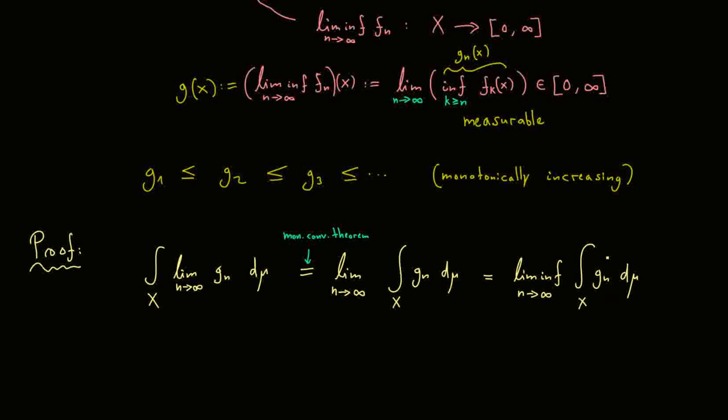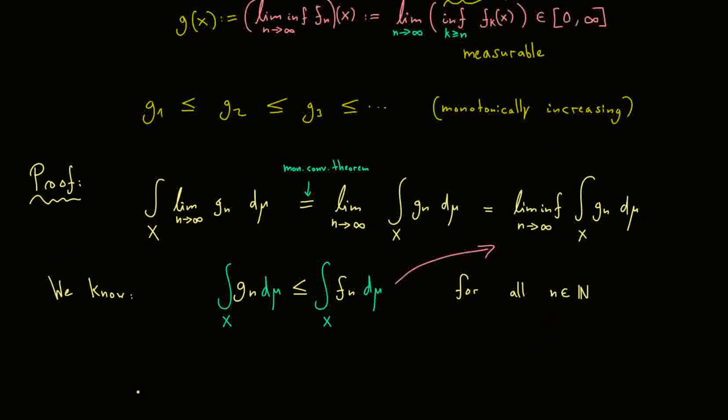However, in the end, we want fn and not gn in the integral here. Therefore you can ask, what is the connection between gn and fn? And then you look at the definition and see, okay, gn is defined over all fk, where k is bigger than n. And then you choose the infimum, the smallest possible value. And therefore, of course, gn is always less or equal than fn as being the infimum. So let's state that as we know, gn less or equal than fn for all n. And now you want to use the monotonicity of the integral, which is a very nice property of the Lebesgue integral. So if we have the inequality here, then it also holds for the integral.